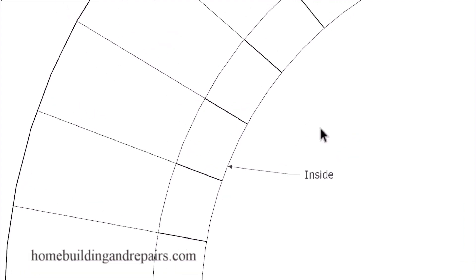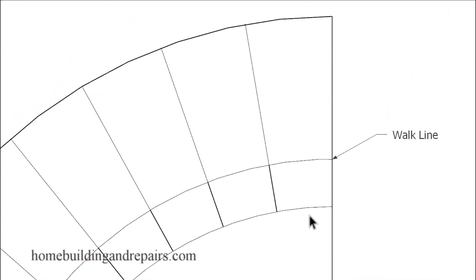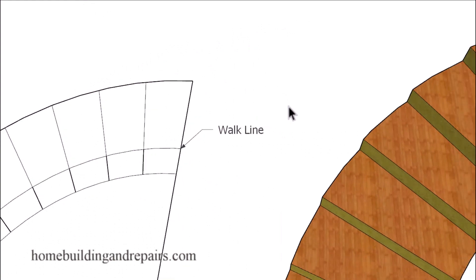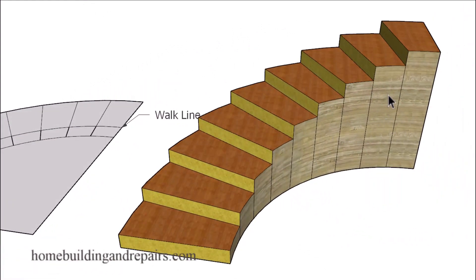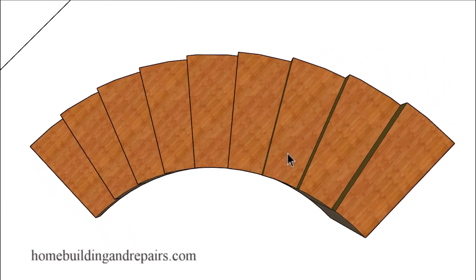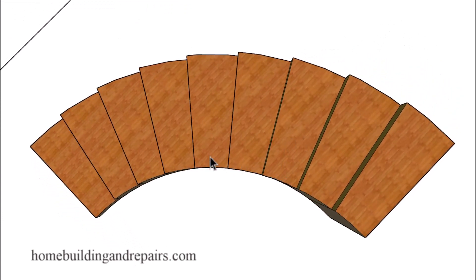Since this particular stairway has steps that are exactly the same size on the inside, on the walk line, and on the outside, then we're not going to have any problems with the building codes. So again, that would be for a stairway like this - a curved stairway with the same sized treads on each step.